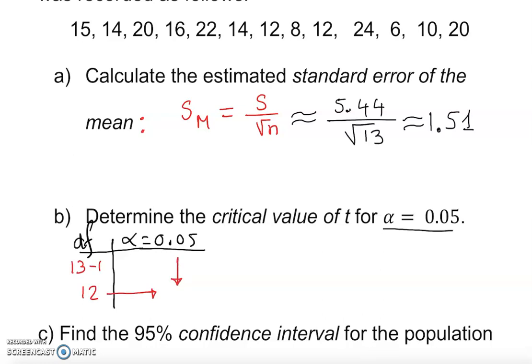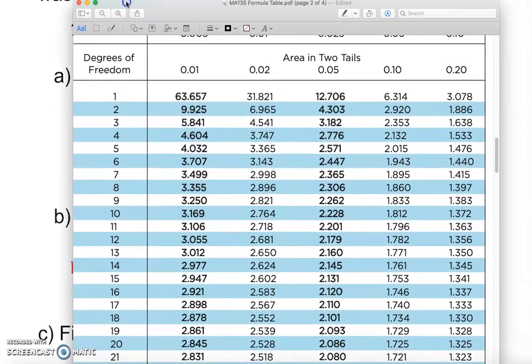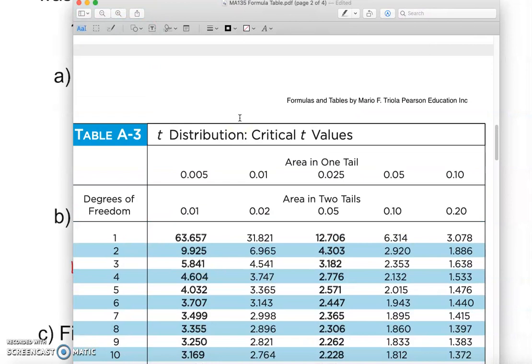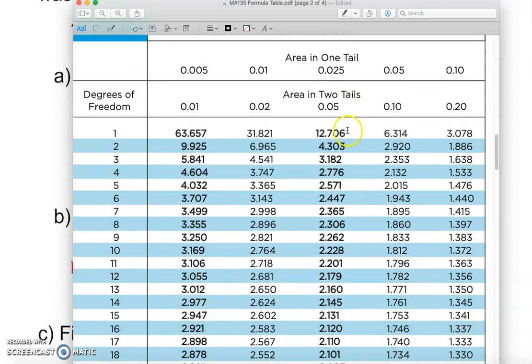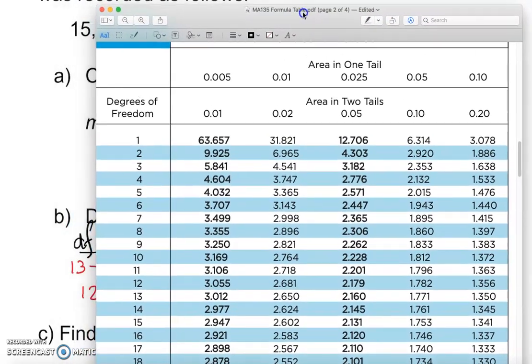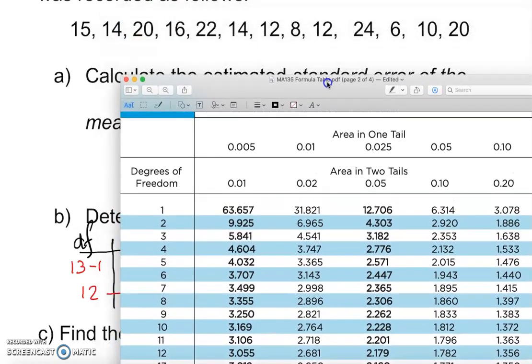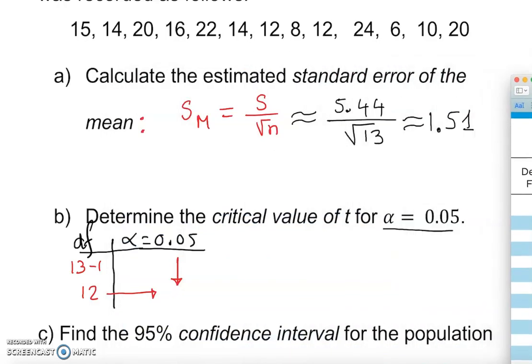12 degree of freedom, we go under 5%, and that is what we look for in the t-table. Here you go, that's the t-table. So again, this is the t-table. Now we have 12, and under 0.05, so we go 12, that's the 12 here, and under 0.05.